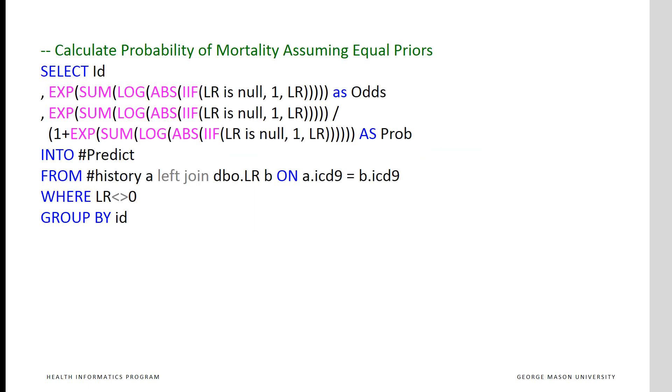This code snippet shows how the calculation can be done, and we're going to walk you through this code. First one selects the medical history of the patient here from the file history, and second we left join that with the file in which we have saved the likelihood ratios associated with each diagnosis in the history of the patient.